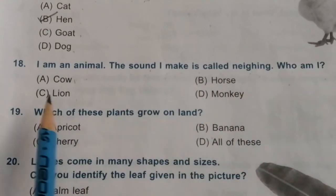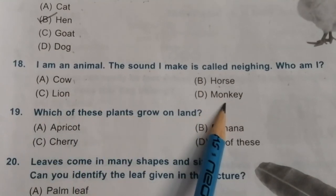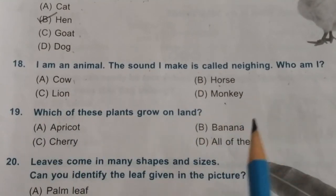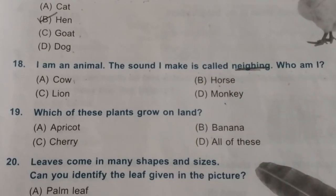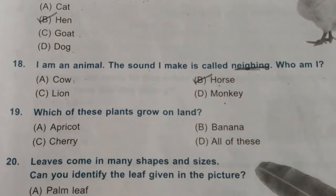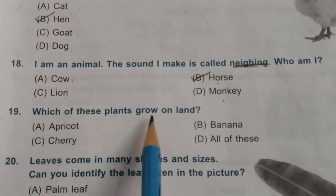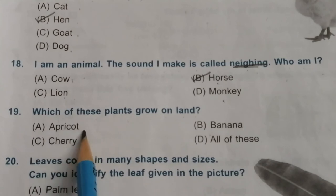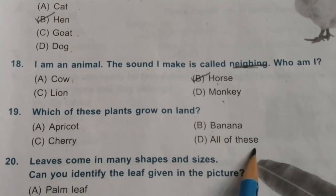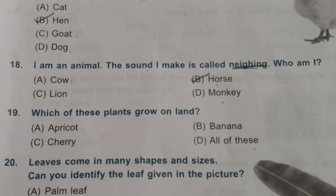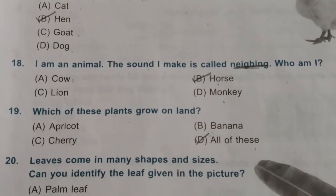The sound is neighing, so the answer is horse. Nineteenth question: which of these plants grow on land — apricot, banana, cherry, or all of these? The answer is all of these.